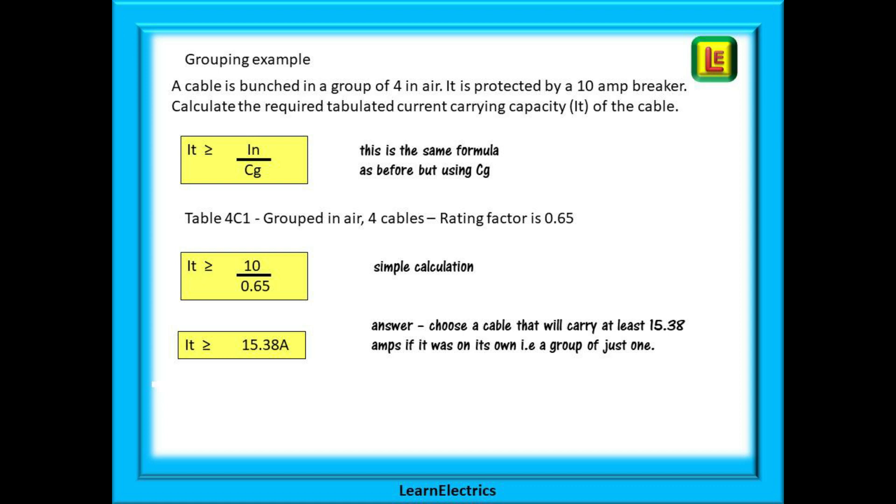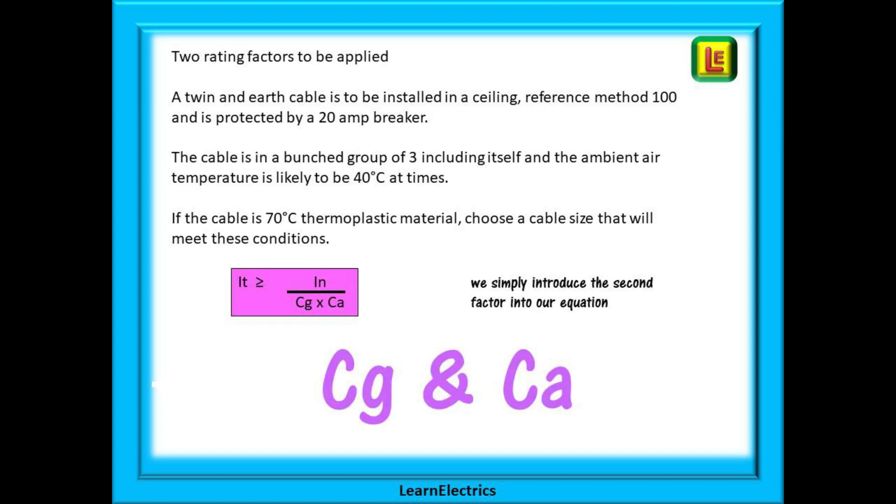And what does this tell us? In order to carry 10 amps in a group of 4 cables your cable must be able to carry 15.38 amps when it is not in a group or a group of 1 as they call it in the book. Now we can apply two factors. So let's see what happens.